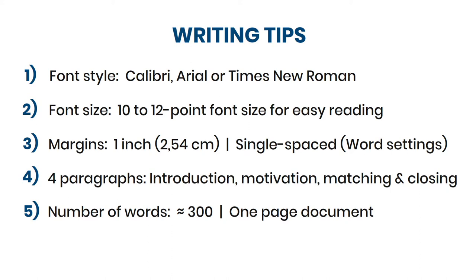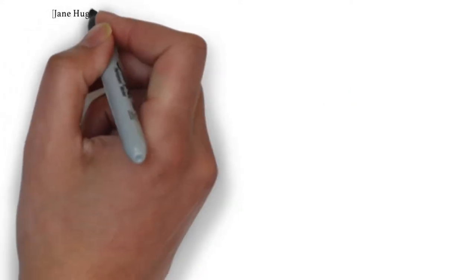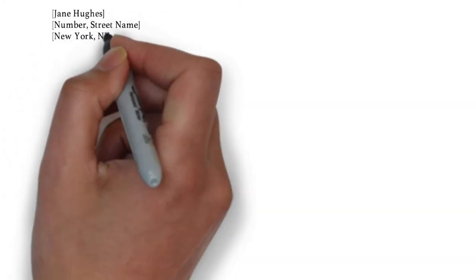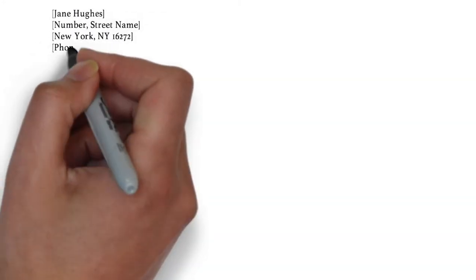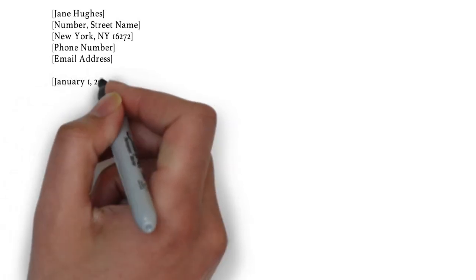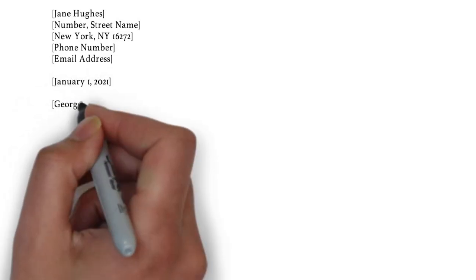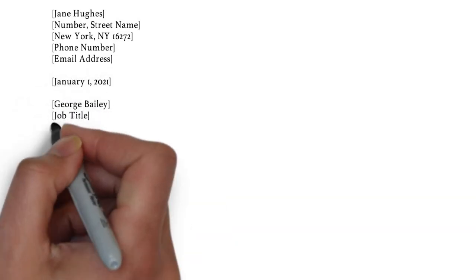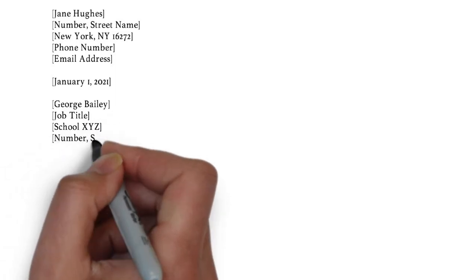Okay, that's it for the writing tips. Next up, I want to start writing the example letter. First thing you need to do is list your contact information on the left side. In between white lines underneath, we put the date, and then the reader's name and job title, followed by the school's information.